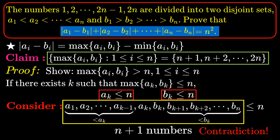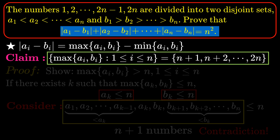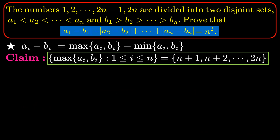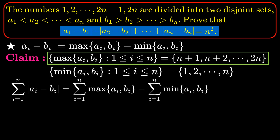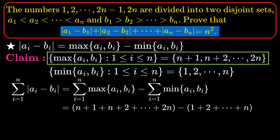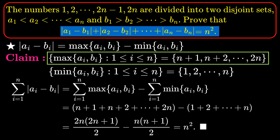So such k cannot exist, and max(a_i, b_i) is indeed greater than n for all i between 1 and n. Hence the maximums are the numbers n+1 to 2n and all the minimums are the numbers 1 to n, so the final answer can be calculated to be n squared by summing n+1 to 2n and subtracting 1 to n. This proves the identity.